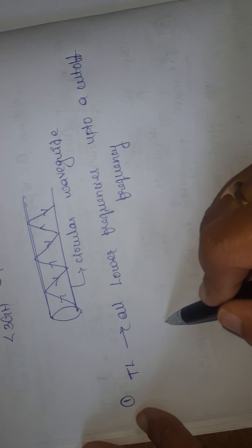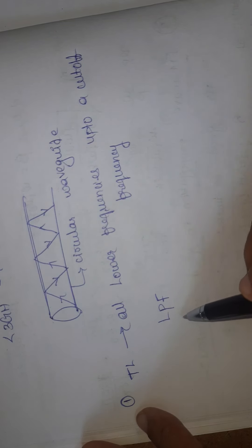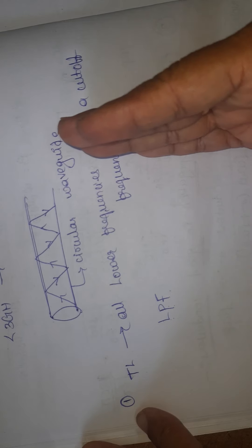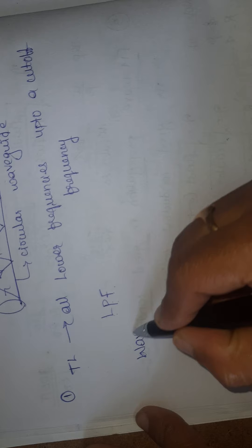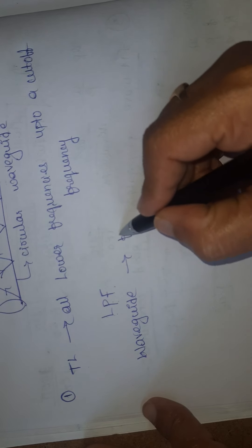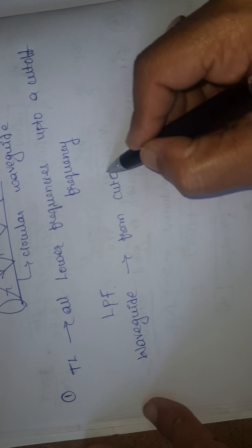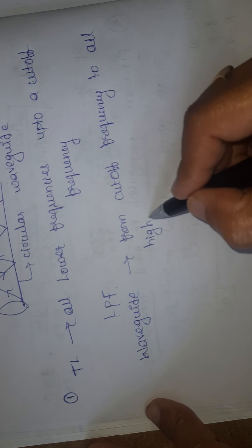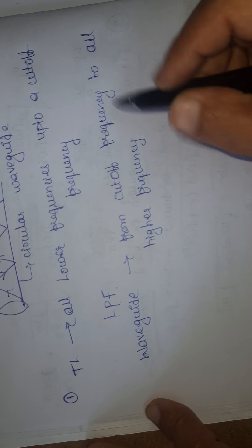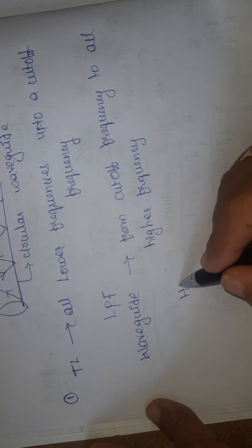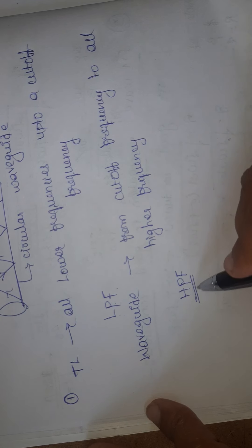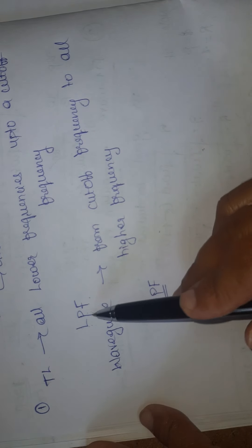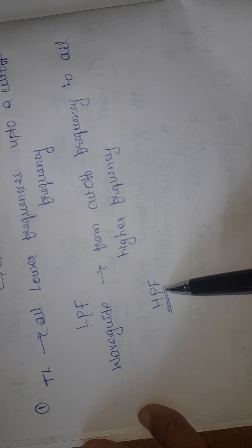A transmission line can be treated as a low pass filter — a filter which allows only low frequencies up to some cutoff frequency. Similarly, a waveguide allows frequencies from a cutoff frequency to all higher frequencies. It won't allow low frequency signals, so that's why it is known as a high pass filter, passing signals from the cutoff frequency to all higher frequency ranges.